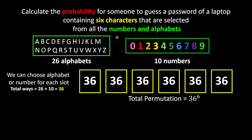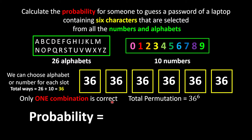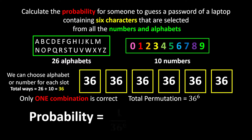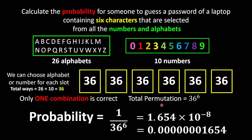The answer will be a probability. Out of 36^6 combinations, there is only one correct password. The probability formula is the event you're interested in divided by the total number of possible events. The total ways to create the password is 36^6, and I'm only interested in the one correct password, so the probability is 1 over 36^6 — a very small number, because there are too many combinations and it's very difficult to guess the password.